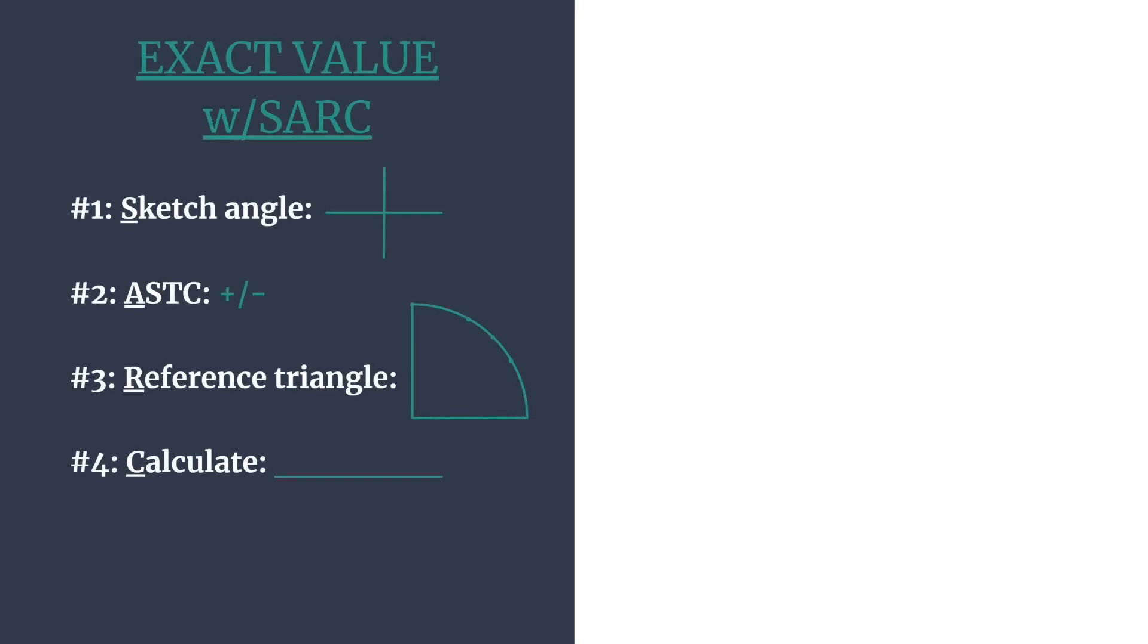So here's our method outline. First, the S, we will sketch the angle. Second, A stands for ASTC, our acronym for determining which trig functions are positive in each quadrant. R for determining our reference triangle and appropriate coordinates. And C for calculating the ratio.